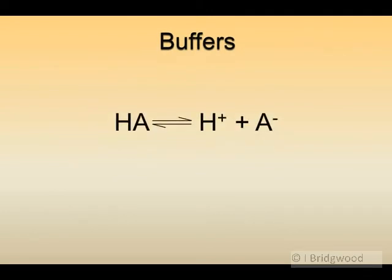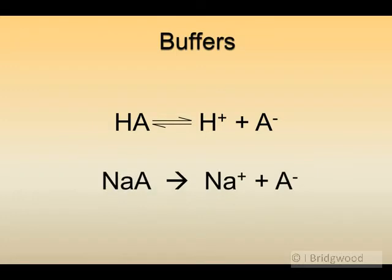Here we have our weak acid partially dissociating into hydrogen ions and A- ions. Don't forget the position of this equilibrium is well over to the left-hand side, so the concentration of H+ and A- are relatively small. But when we add the conjugate base — the sodium salt, for example — it completely dissociates into sodium ions and A- ions. No equilibrium, complete dissociation.